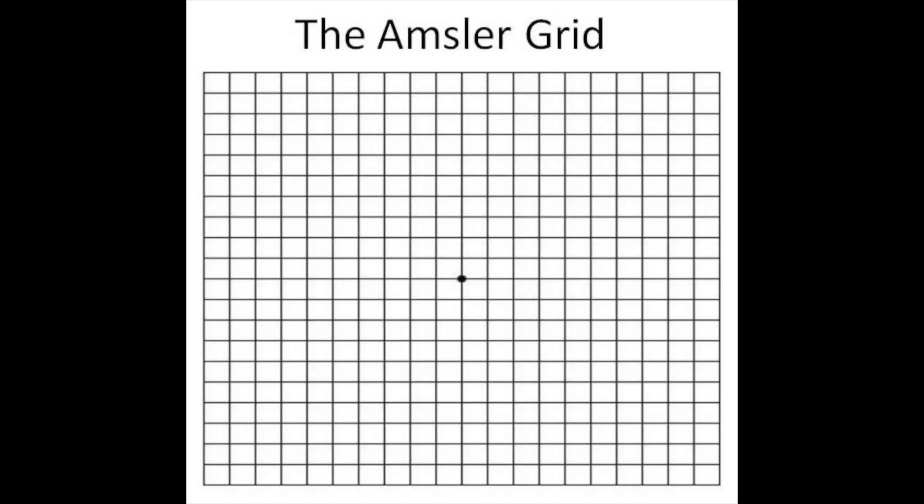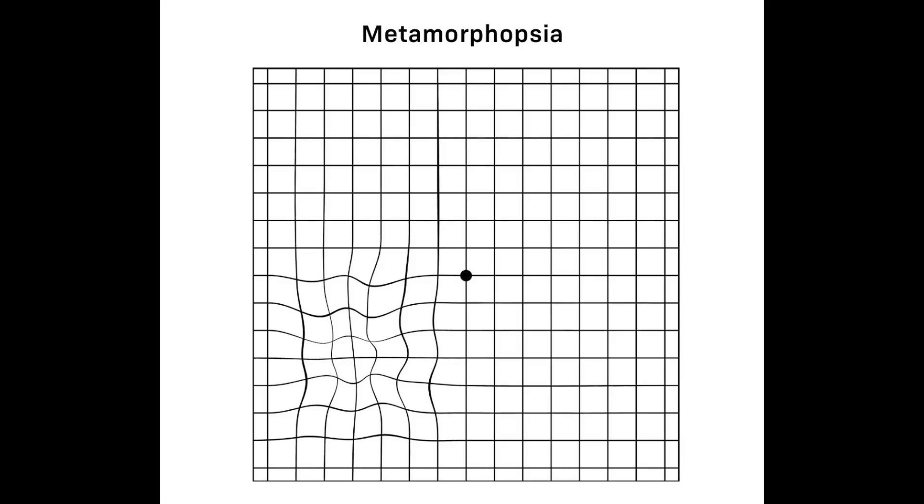Sometimes your doctors are going to give you something called an Amsler grid. There's nothing magic about it — it's basically like a piece of graph paper, but it's really useful. You look at it, cover up one eye and look at the lines, then cover up the other eye and look at the lines. You're looking for any distortion or waviness in those lines, or any blind spots or abnormalities on that grid. It's a great way to diagnose early wet macular degeneration. Your doctor might suggest putting it on your fridge and checking it every day, making sure you cover one eye at a time.